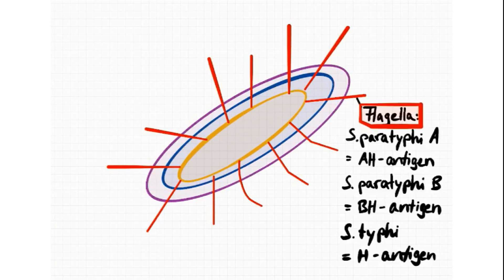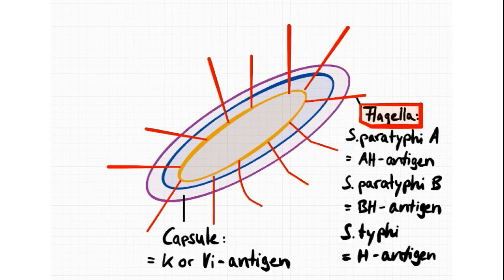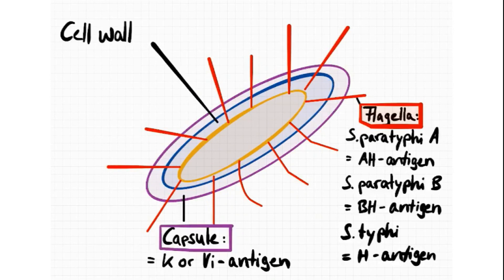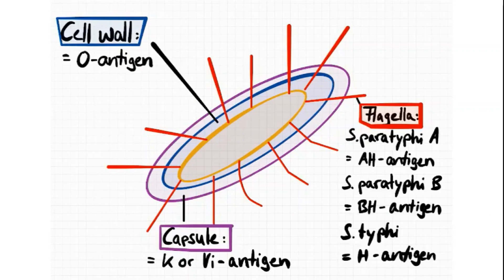The second antigen is the Vi antigen, which is located within the polysaccharide capsule and is poorly immunogenic. The third antigen is the O antigen or cell wall antigen, which is found on the polysaccharide portion of the lipopolysaccharides. These are less immunogenic and are commonly used to serologically type many of the anterior gram-negative rods.